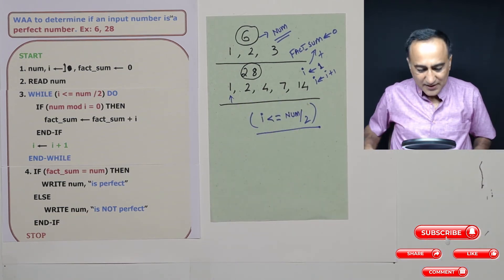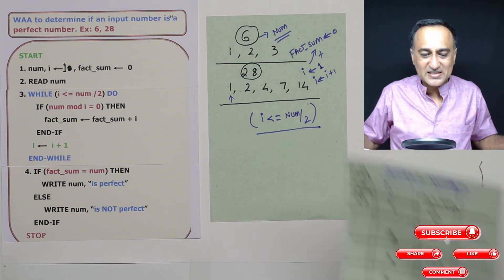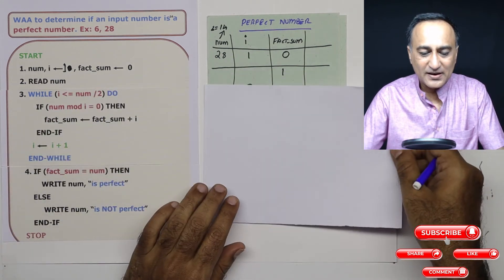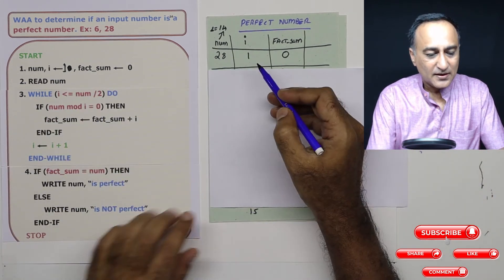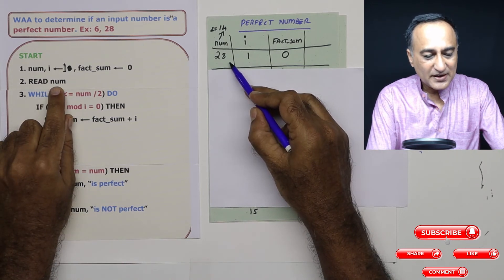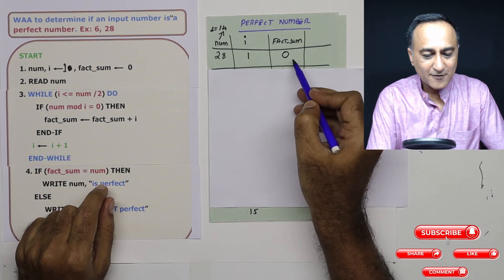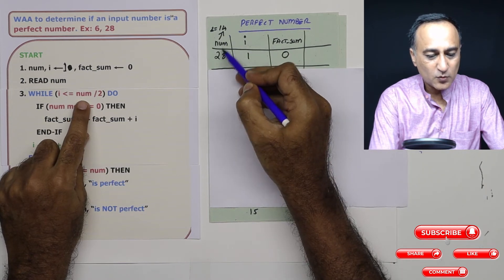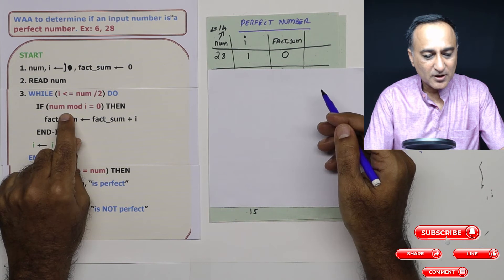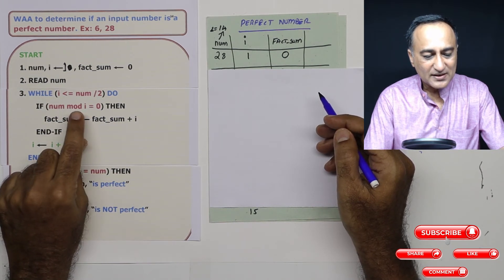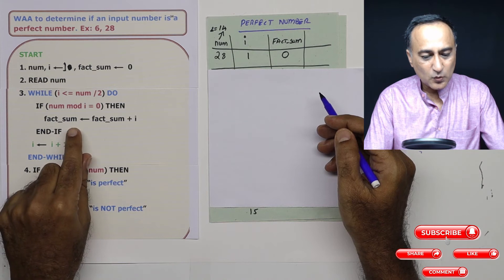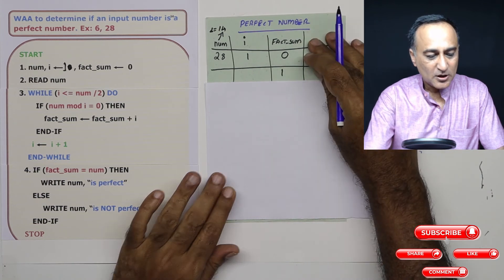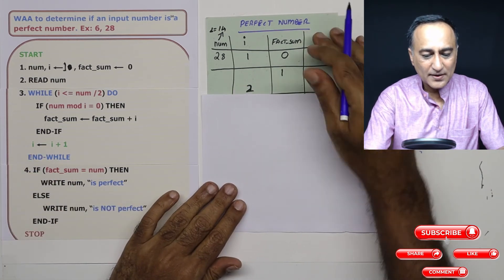To gain a complete understanding, we shall use a test table to verify the logic. We read the number as 28. The initial value of I is 1 and fact_sum is 0. Is I=1 less than or equal to 14 (which is number divided by 2)? Yes. So 28 mod 1 — is it zero? Yes. So fact_sum becomes 0 plus 1 equals 1. Then I is increased by 1, so I becomes 2.